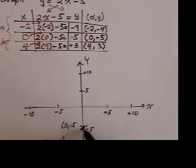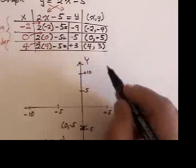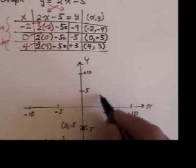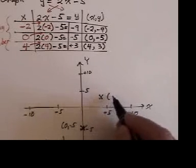I'll put x's through them. Now I go to 4 and 3. So I go over to positive 4 and up positive 3. And I put an x there.